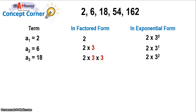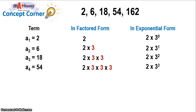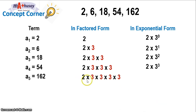The fourth term of the sequence is 54. It can be rewritten in factored form as 2 times 3 times 3 times 3, or in exponential form as 2 times 3 to the third power. The fifth term, 162, can be rewritten as 2 times 3 times 3 times 3 times 3, or in exponential form as 2 times 3 raised to the fourth power.